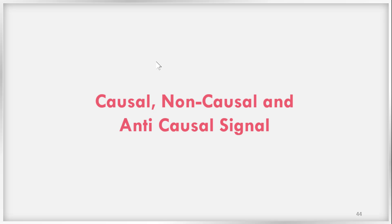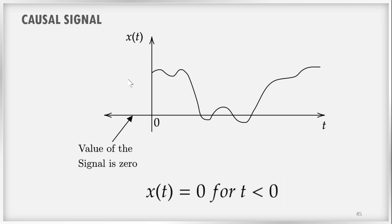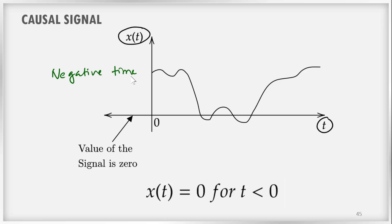Causal, noncausal, and anticausal signals. Consider we have a signal x(t), and on the x-axis it is marked as t. If we are sure that the signal does not exist for the negative time axis, then we can call that signal a causal signal.